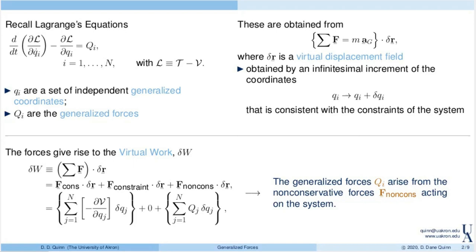I'm going to start off with a slide that recaps what we talked about in the video lecture that dealt with the development of Lagrange's equations. These are Lagrange's equations written in their general form: the total derivative with respect to time of the partial of the Lagrangian, which is the difference between kinetic and potential energies, and that partial with respect to qi-dot, minus the partial of the Lagrangian with respect to qi. qi are the generalized coordinates, and that equals Q, the generalized force associated with the i-th coordinate.